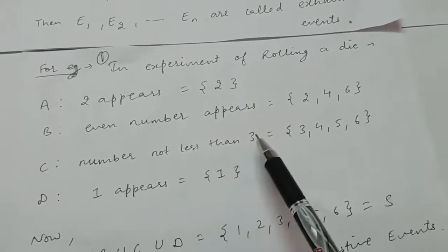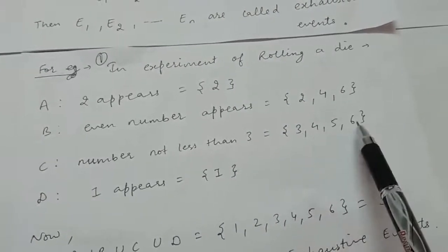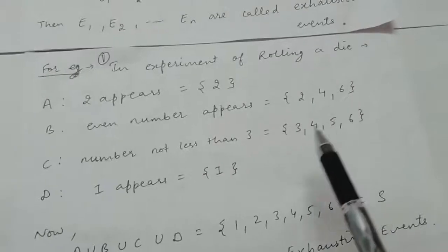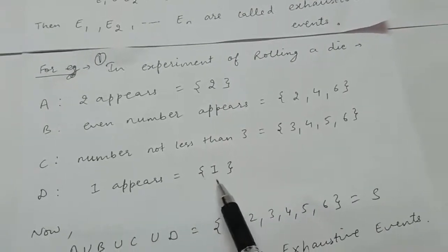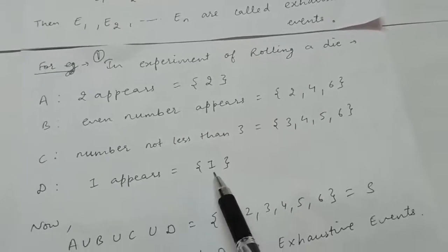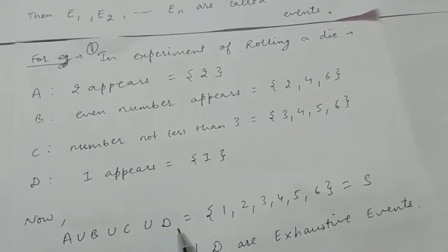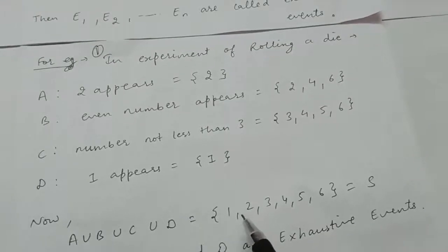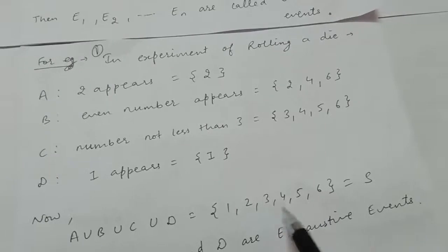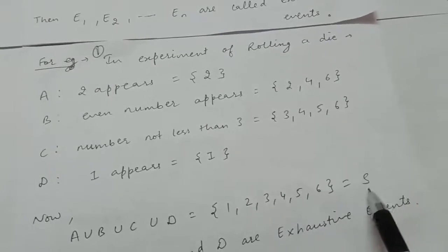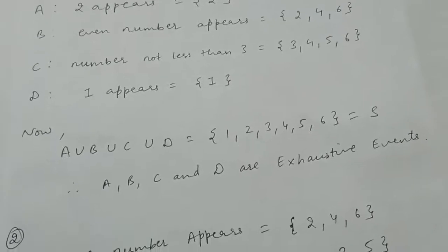Event C is a number not less than 3, so C = {3, 4, 5, 6}, and event D is 1 appears, so D = {1}. The union of all four events A, B, C, D is {1, 2, 3, 4, 5, 6}, which is the sample space. Because the union equals the sample space, events A, B, C, and D are exhaustive events.